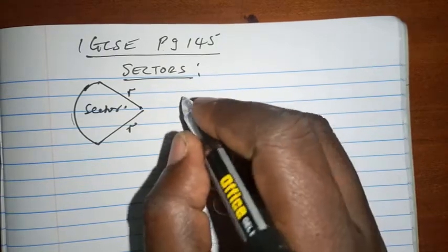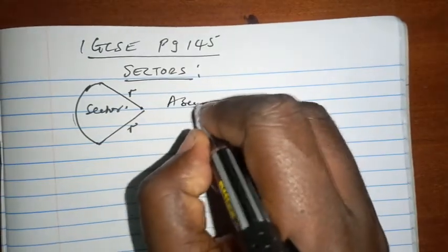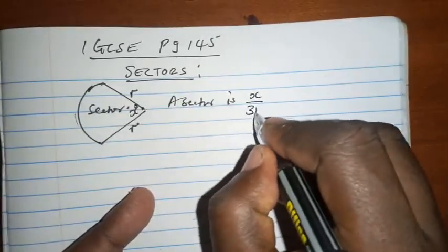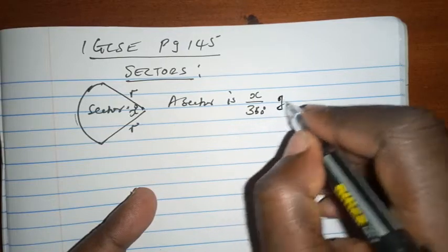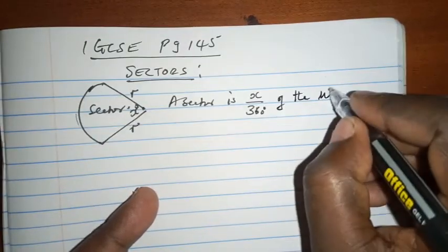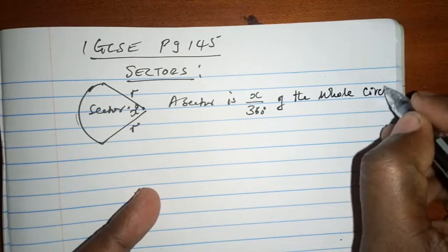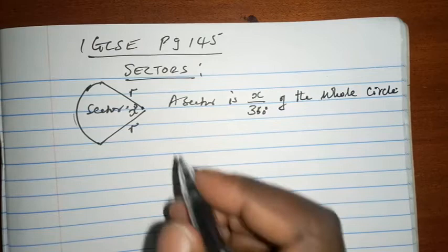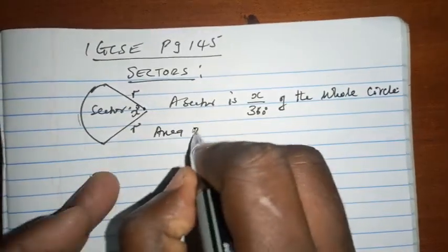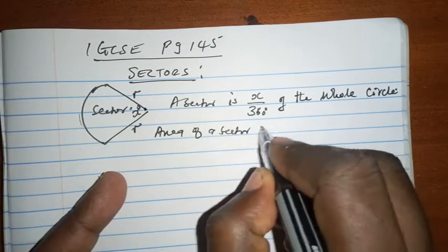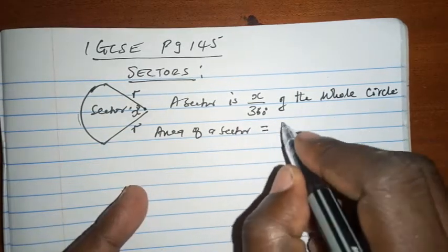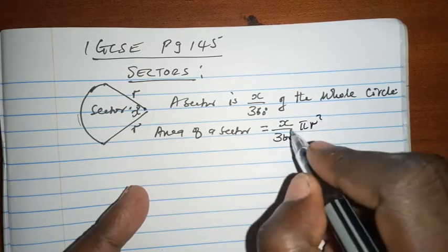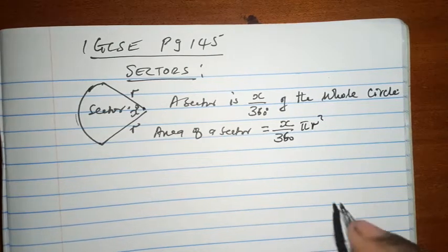A sector is x over 360 degrees of the whole circle. What do we mean by this? Therefore, the area of a sector is determined by the angle at the center, which is x out of 360 pi r squared. That is just as easy as that.